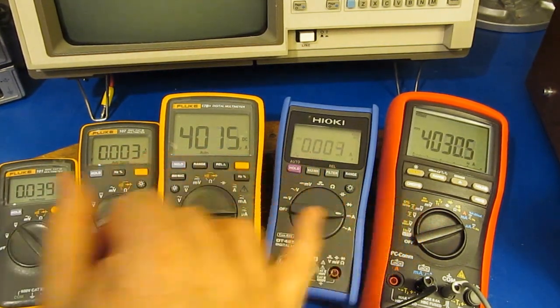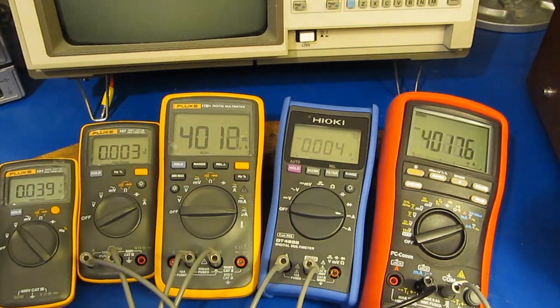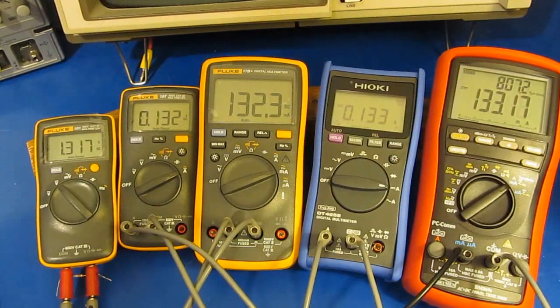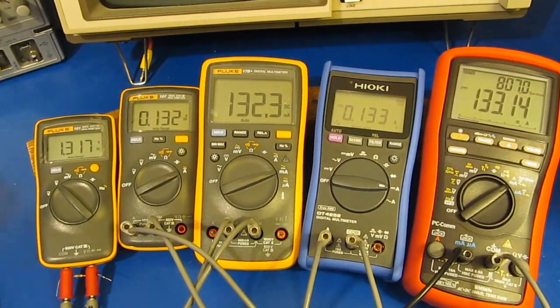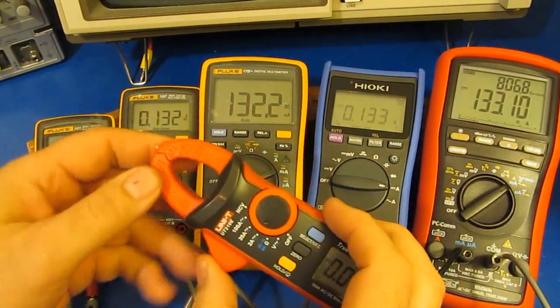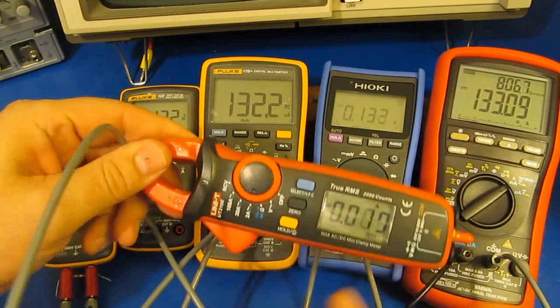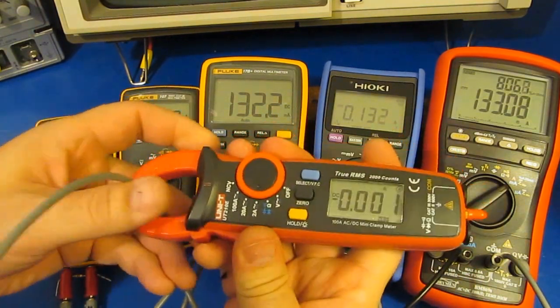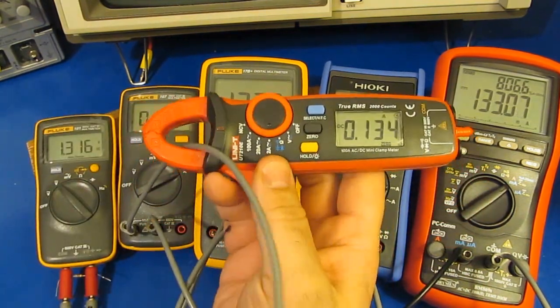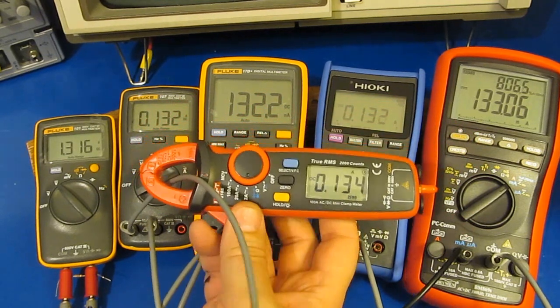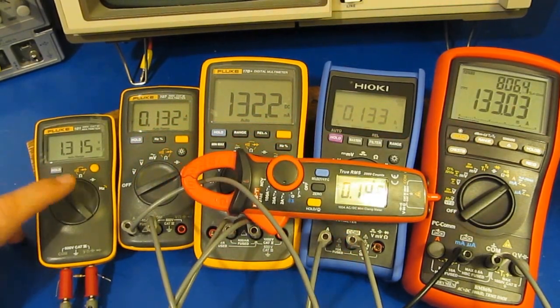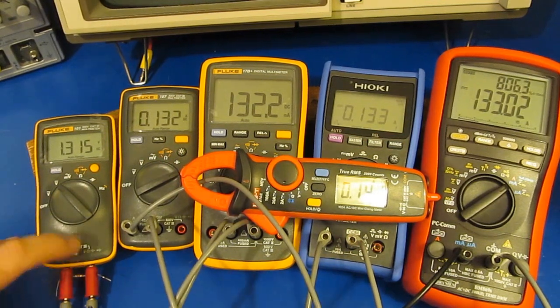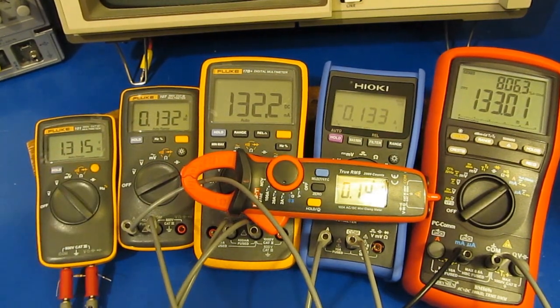This is roughly 133 milliamps and now we're in a range where this UT210E could probably read this without any problem at all. We can see 134 milliamps with this, and again our Fluke 101 with our 10 ohm shunt is fairly close.